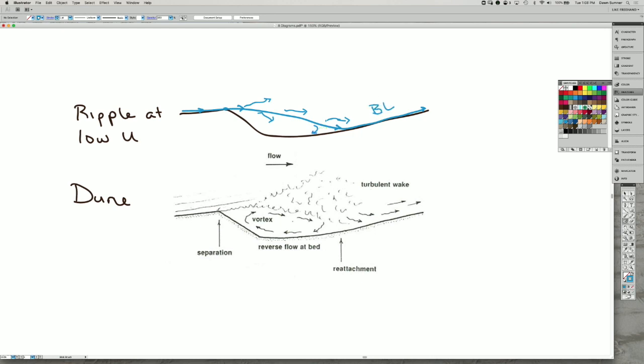In a dune, there's a really strong flow going across from the separation point and you end up with this zone of shear because your flow speed is very low at the bottom and it's very high.